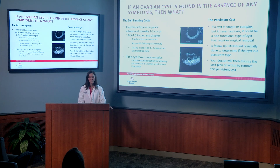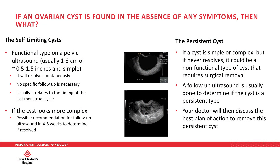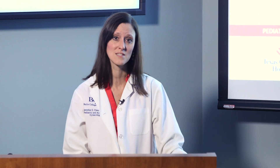If an ovarian cyst is found in the absence of any symptoms, sometimes they're self-limiting. The self-limiting types are functional cysts typically found incidentally on a pelvic ultrasound, usually one to three centimeters in size, with simple characteristics meaning all fluid contained within the cyst wall. These have a tendency to resolve spontaneously, no specific follow-up is needed, and resolution usually relates to the timing of a woman's menstrual cycle. If the cyst looks more complex, there may be a recommendation to do a follow-up ultrasound in about four to six weeks to determine if the cyst resolves.